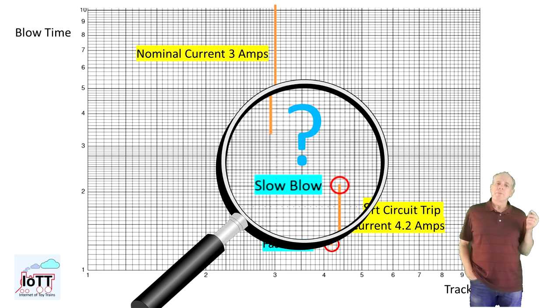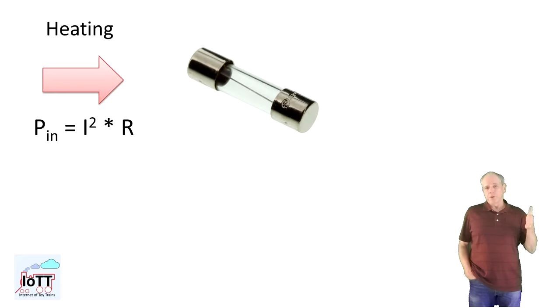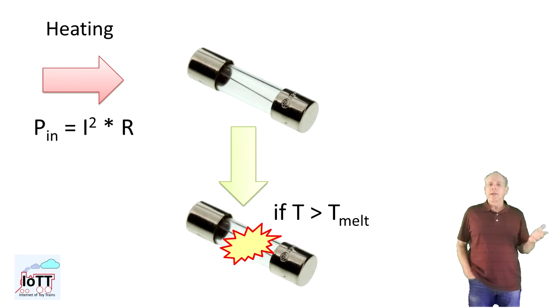Well, to be precise, on the temperature of the fuse. The current through the fuse causes the fuse to warm up until the melting temperature of the metal is reached, then it blows. So it really is a function of the energy that remains in the fuse, which is the product of the square of current and the resistance of the fuse, integrated over time.